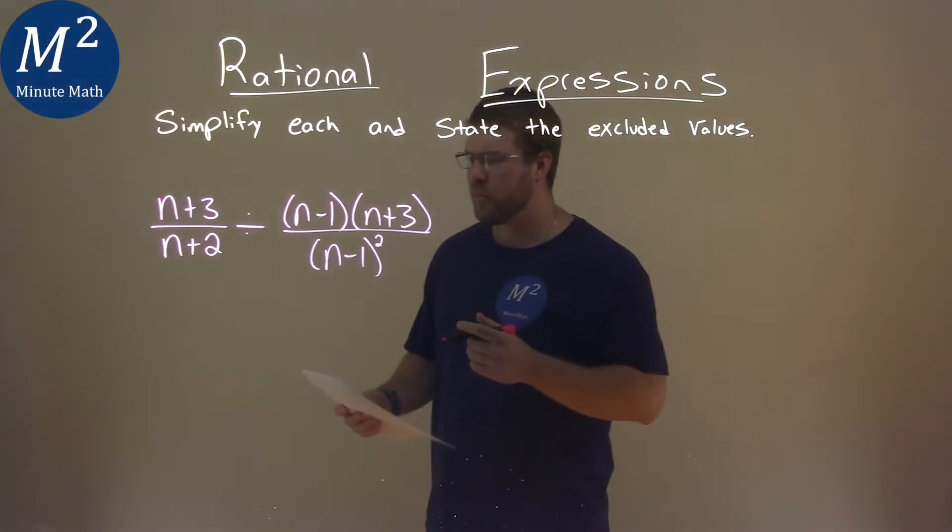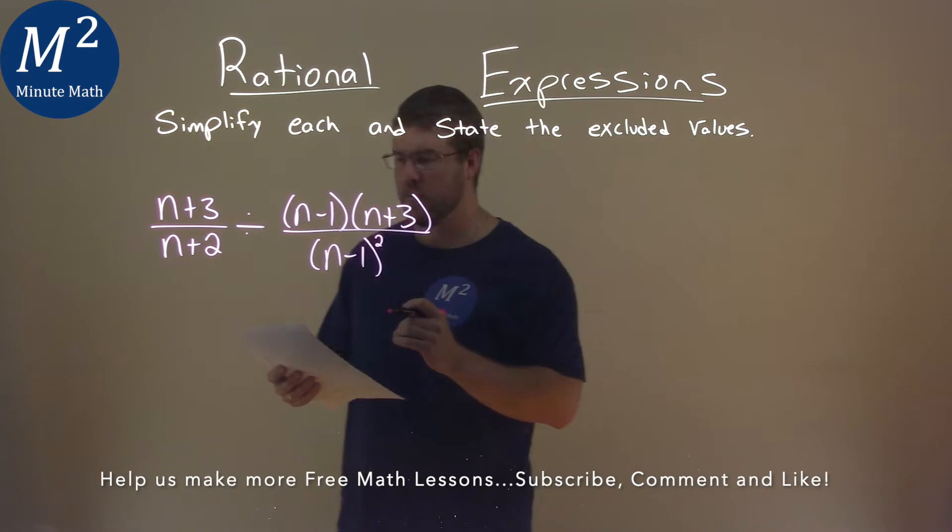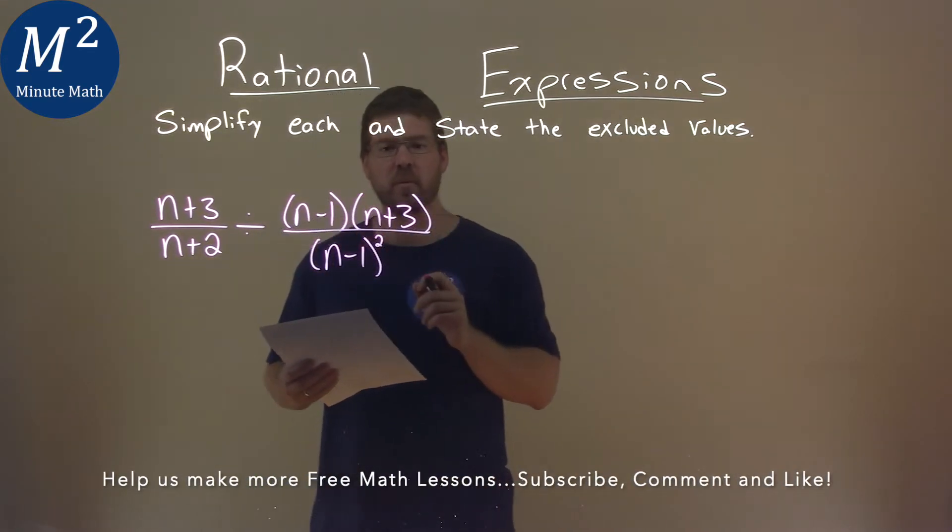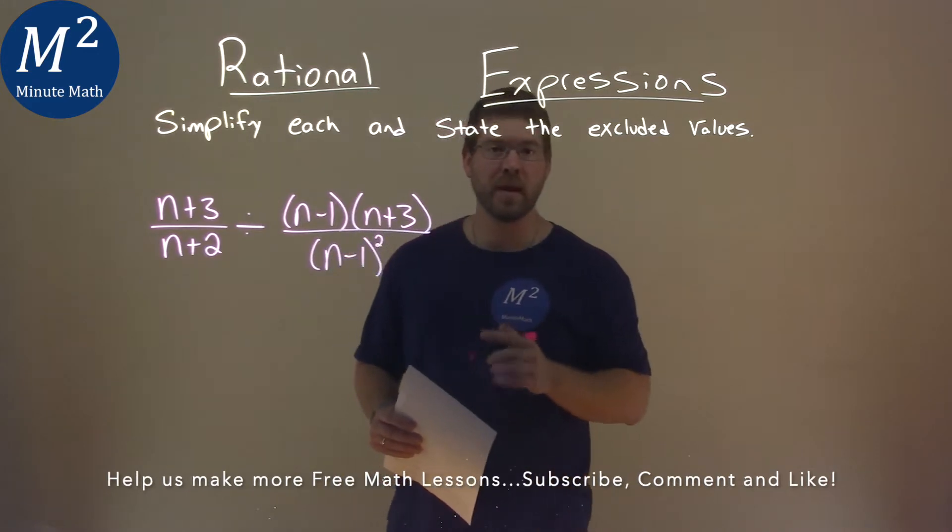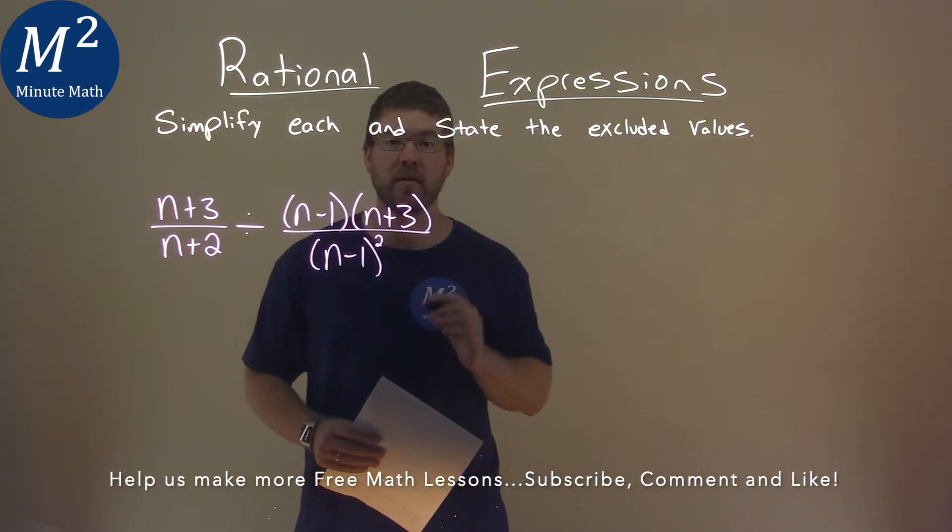We're given this problem right here: n plus 3 over n plus 2, divided by n minus 1 times n plus 3 over n minus 1, all squared. We have to simplify this and state the excluded values.